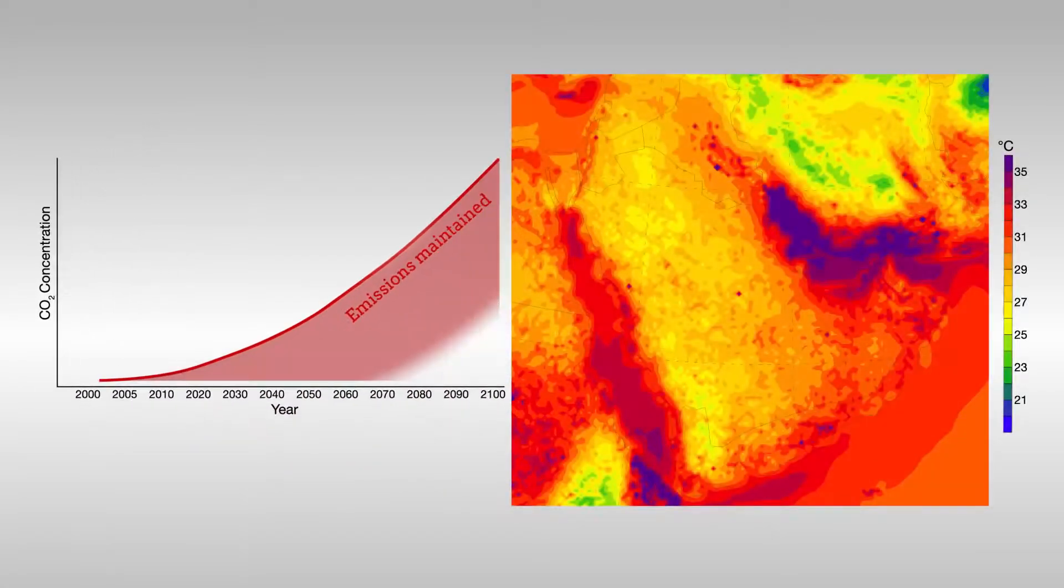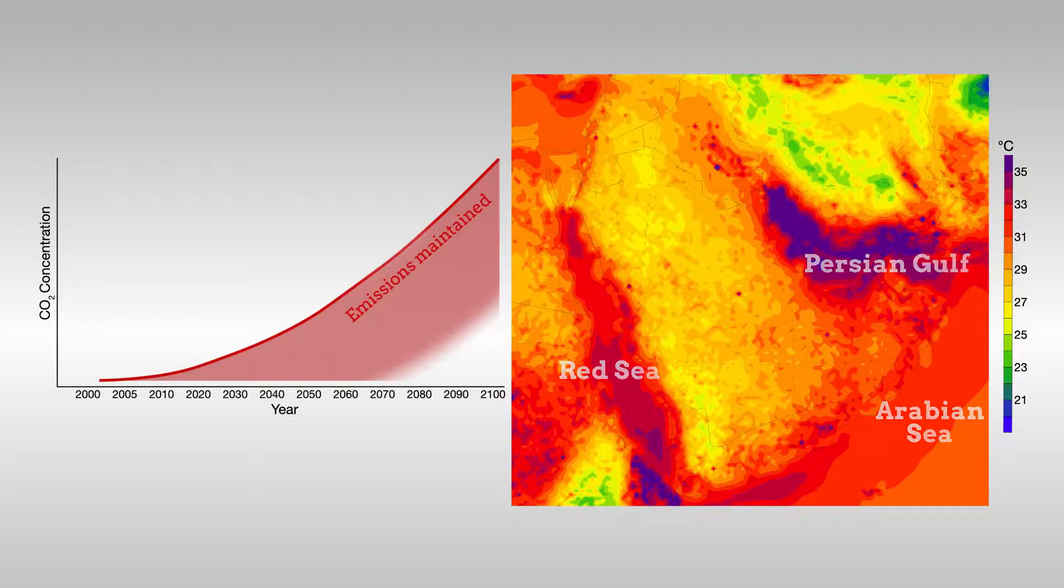In the second scenario, the area characterized by maximum wet bulb temperatures exceeding 31 degrees Celsius grows to include most of the southwest Asian regions next to the Persian Gulf, Red Sea, and Arabian Sea.